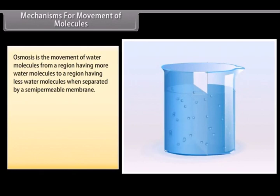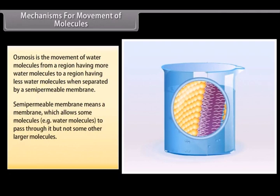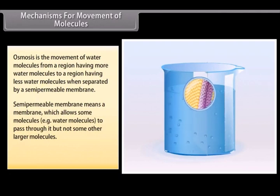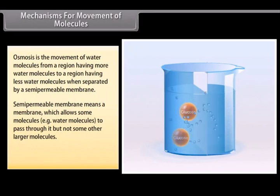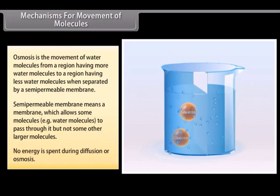Osmosis is the movement of water molecules from a region having more water molecules to a region having less water molecules when separated by a semi-permeable membrane. Semi-permeable membrane means a membrane which allows some molecules, that is water molecules, to pass through it but not some other larger molecules.